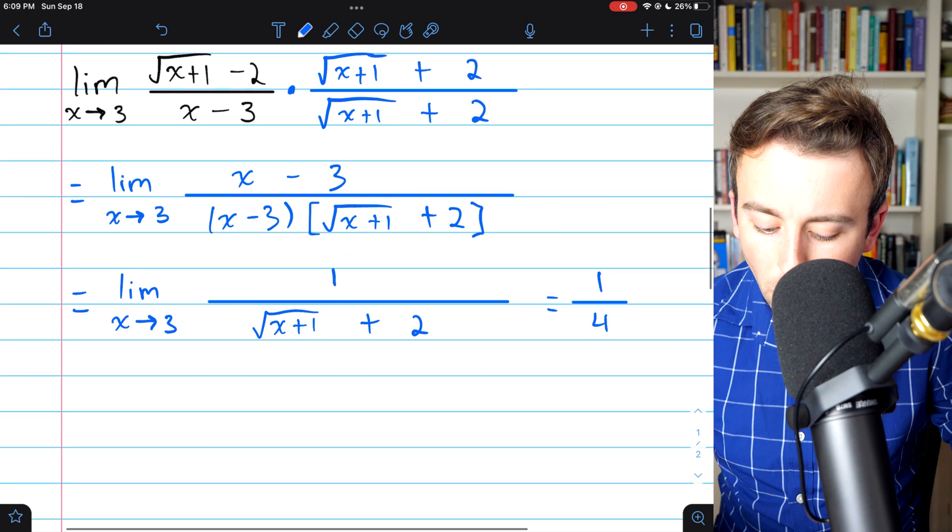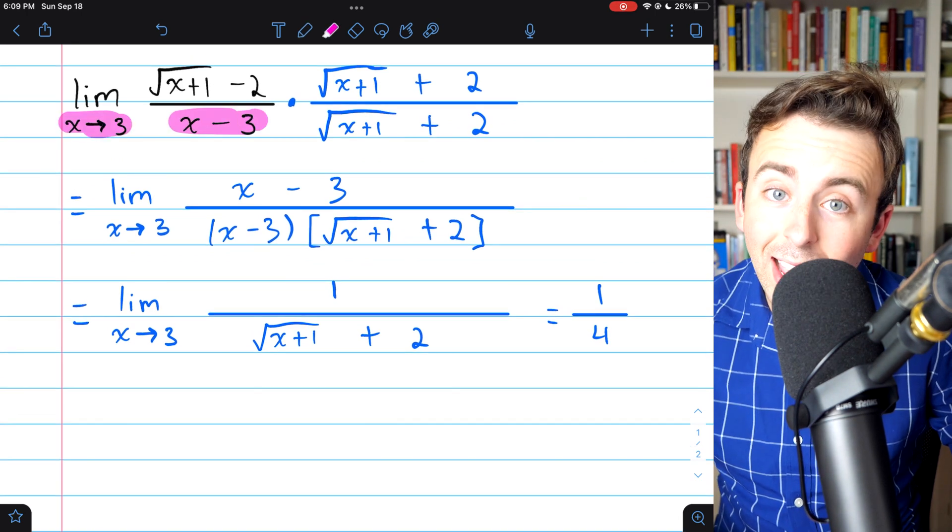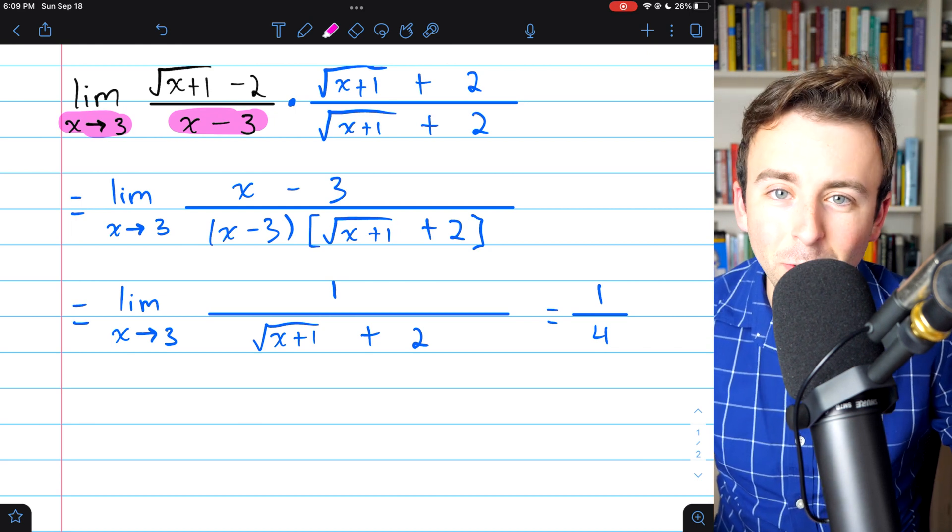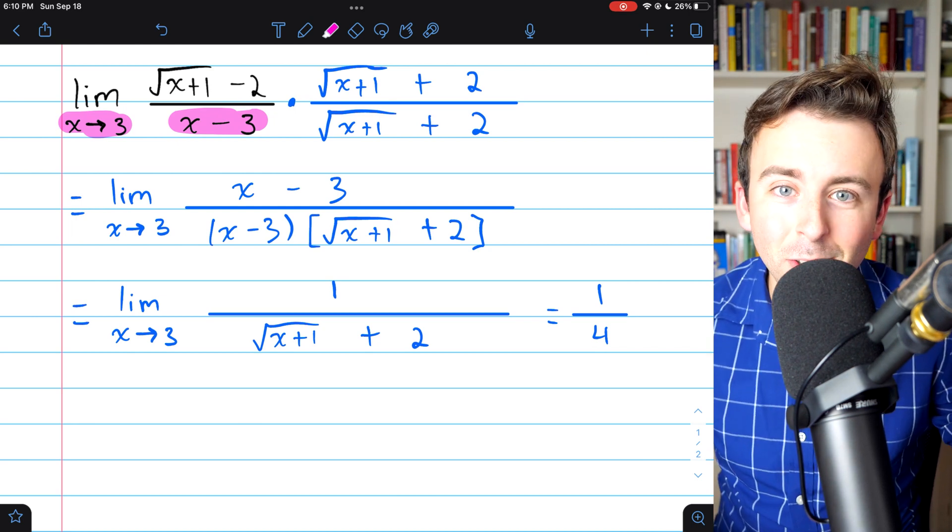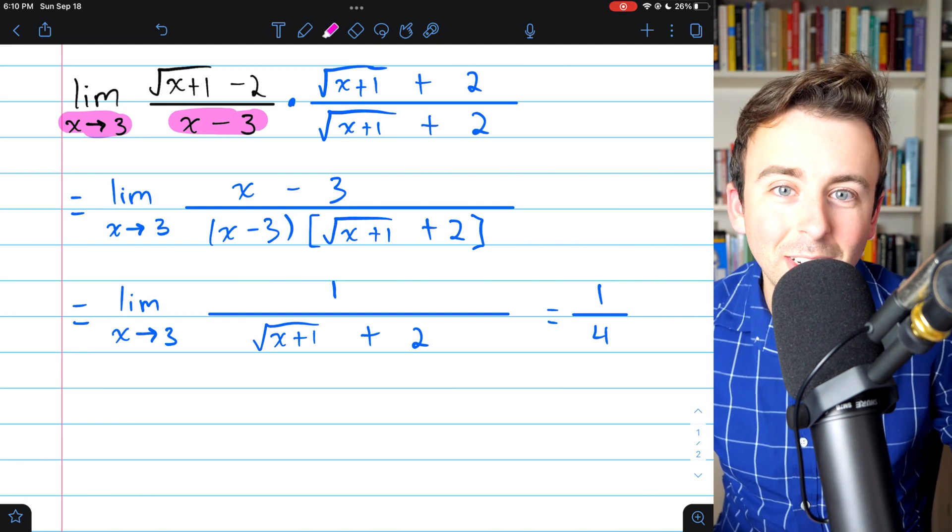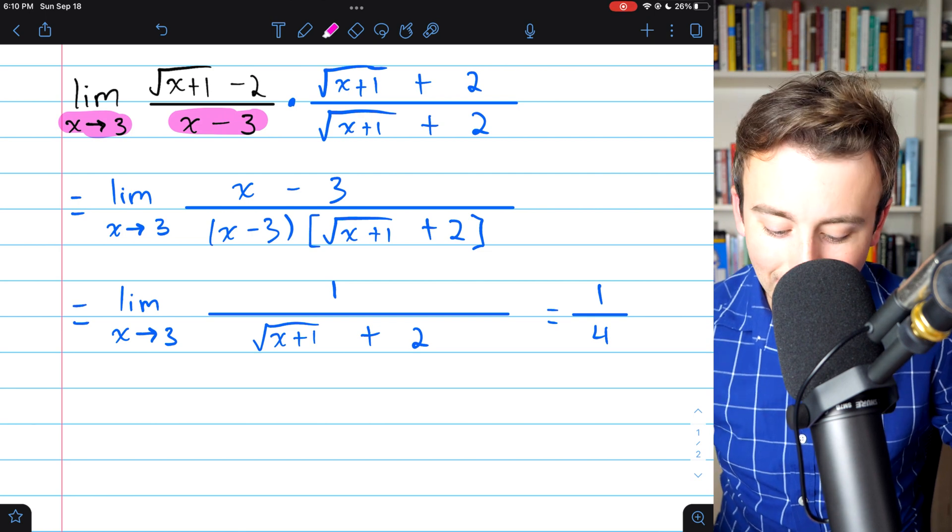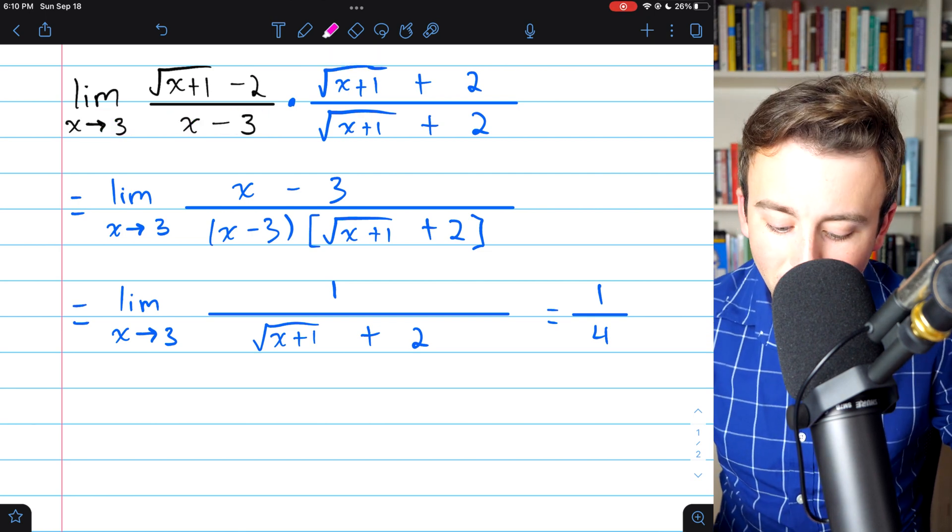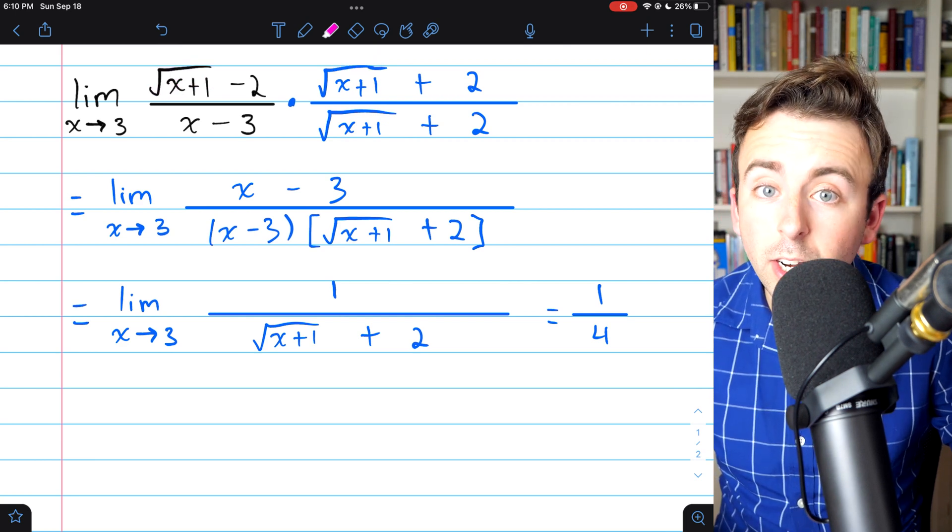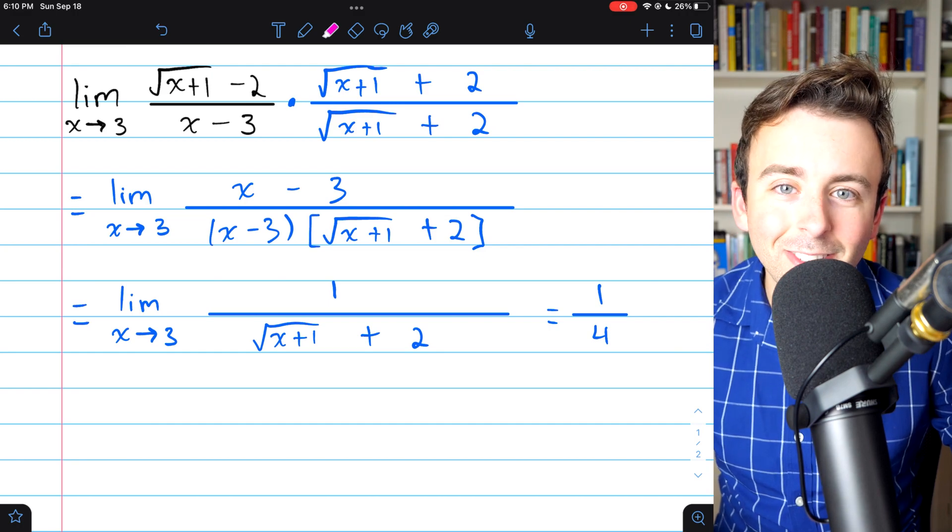So it's a pretty cool strategy. Going back to the start, notice if we plugged in x equals 3 at the start, we would have had a division by 0. I didn't really mention that. Hopefully, you noticed that yourself. Make sure you try substituting to solve your limits right from the jump, because you don't want to waste time fiddling with it if you could have solved it using substitution from the beginning. But if you can't do it with substitution, and you have a radical like this, rationalizing the numerator or denominator is a pretty nifty strategy that sometimes works. Let me know in the comments if you have any questions.